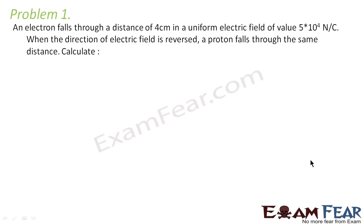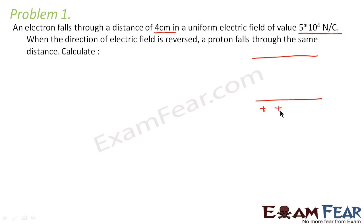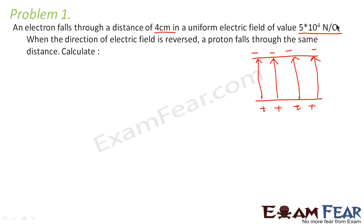Problem 1 states: an electron falls through a distance of 4 cm in a uniform electric field of value 5 into 10 to the power 4 newton per coulomb. We have an electric field — positive charge on one side, negative charge on the other side — so the electric field's direction will be from positive to negative, with intensity 5 into 10 to the power 4 newton per coulomb.